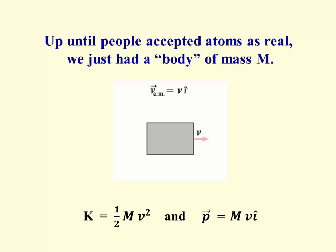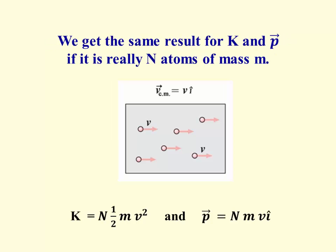Until you accept that atoms are real, you'll just have a body of mass M, what we've done all through this semester. That mass M moving to the right at speed v has a kinetic energy of ½Mv² and a momentum of Mvi.